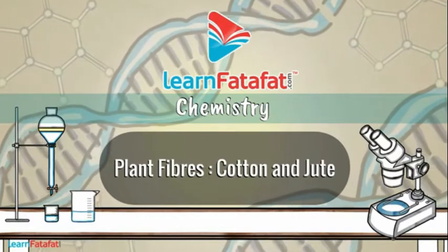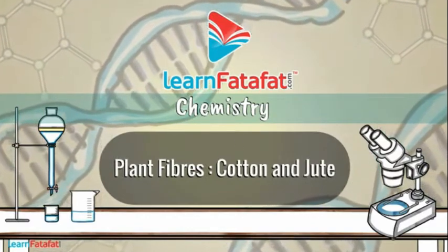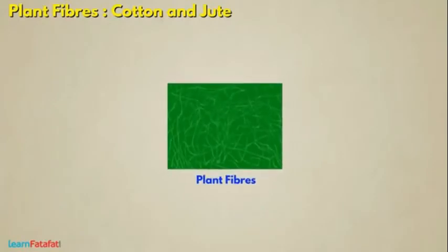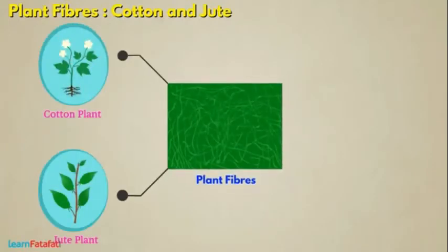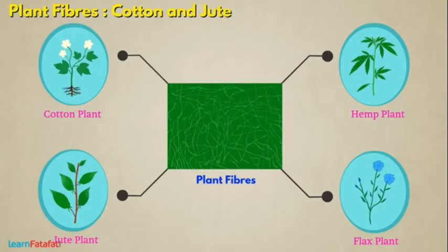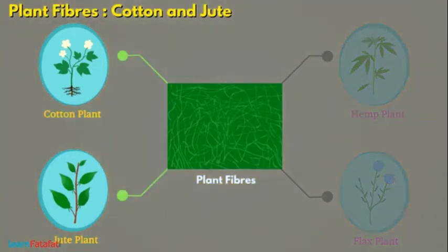Plant fibers: cotton and jute. We obtain plant fibers from plants such as cotton, jute, hemp, and flax. In this video we will understand more about cotton and jute fibers.